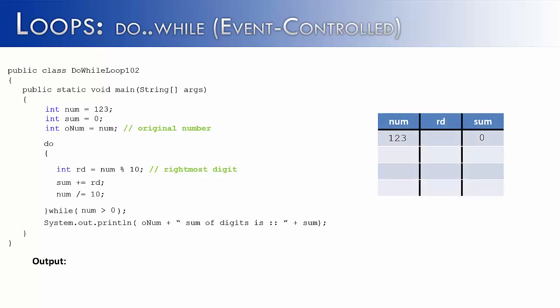So as we run the code, I've created a t-chart to keep track of num, the right digit, or rd, and the sum. So let's go ahead and run through this program and see how it works. First, we go to the do statement, which is going to enter into the loop. We're going to isolate the rightmost digit by taking num and modestly dividing by 10. And as we said earlier, we would get 3. We're going to add that to the sum. 0 plus 3 is 3. And then we're going to divide by 10. And as we showed you earlier, if we took 123 and divided it by 10, it would give us 12.